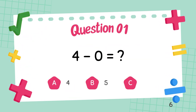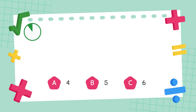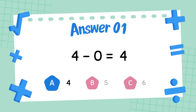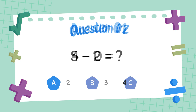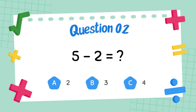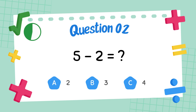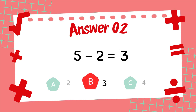What is 4 minus 0? The answer is 4. What is 5 minus 2? The answer is 3.